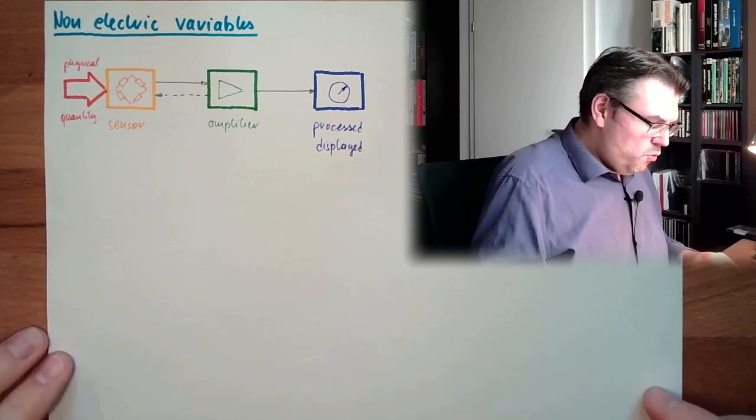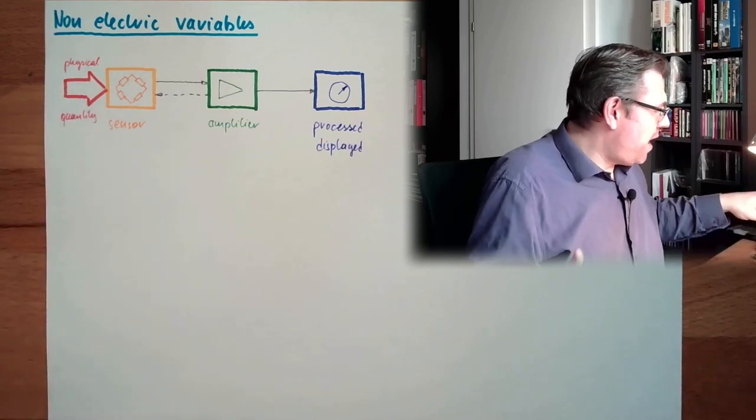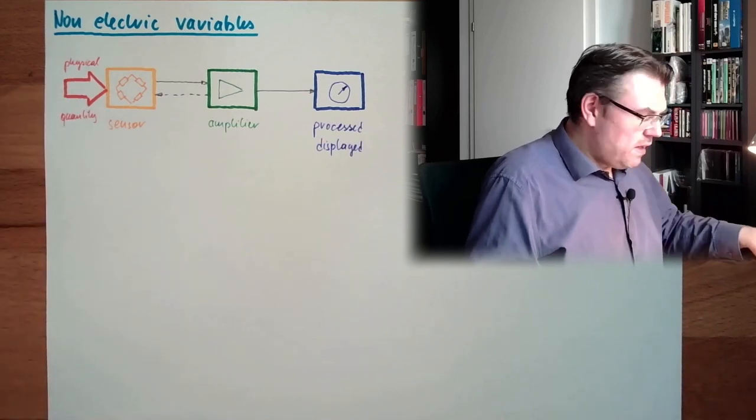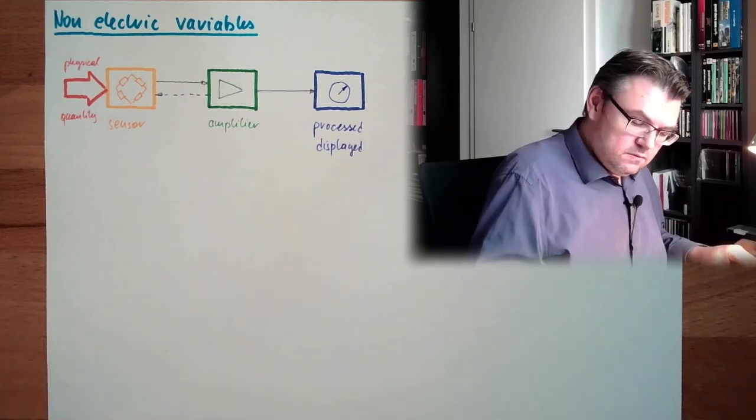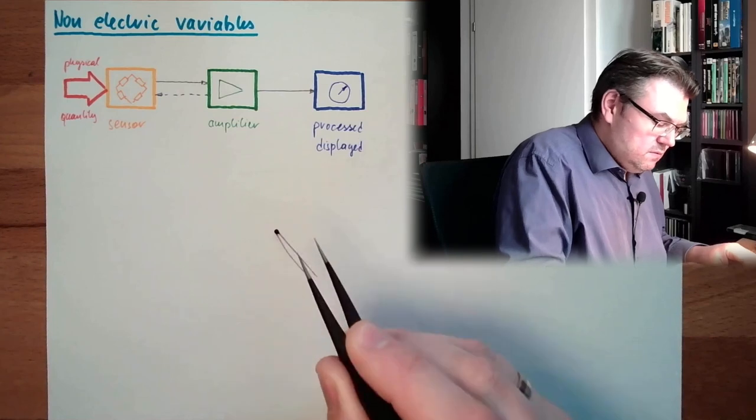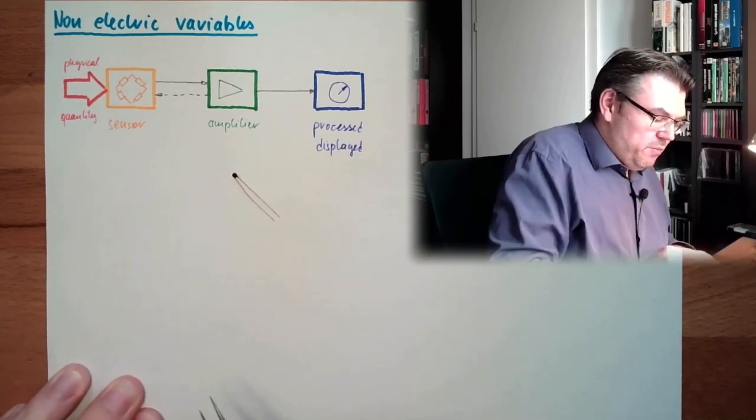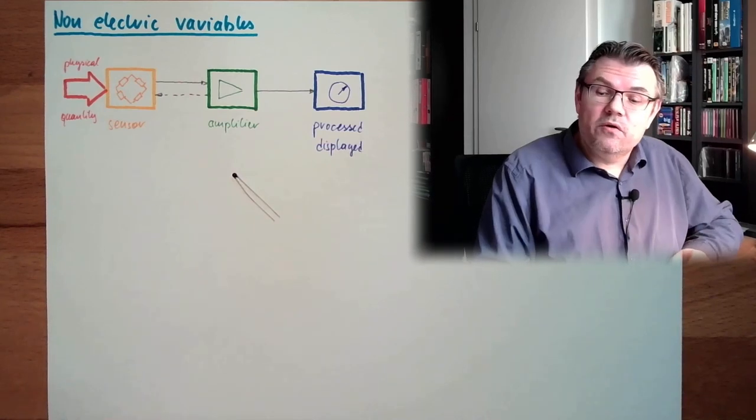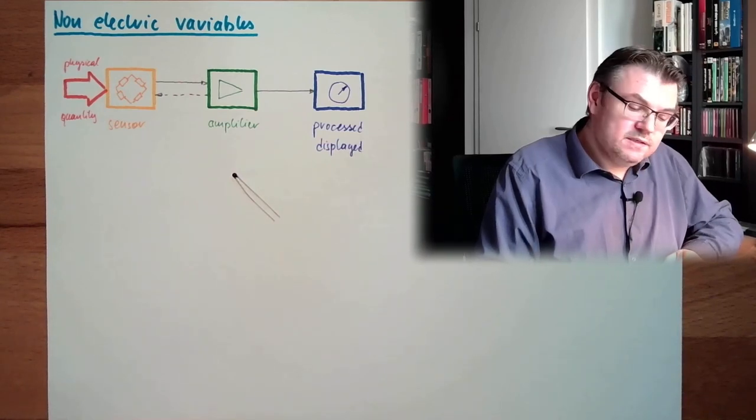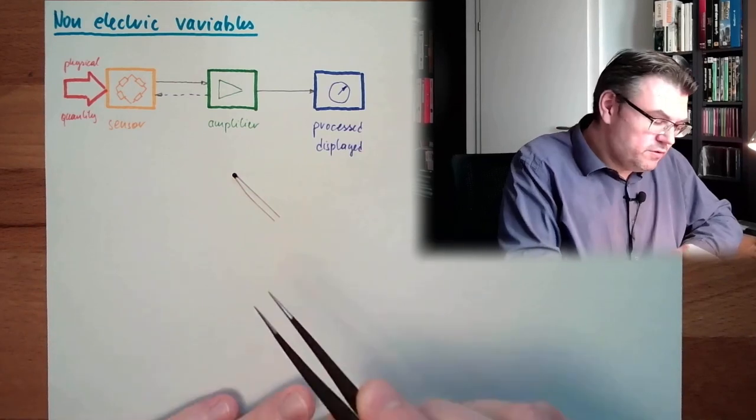All right, so we need some sort of sensor which is changing a parameter. And there, I have for instance a sensor. This here. This is a temperature sensor. Depending on the temperature, it is going to change the parameter of resistance. This is changing the resistance according to heat.